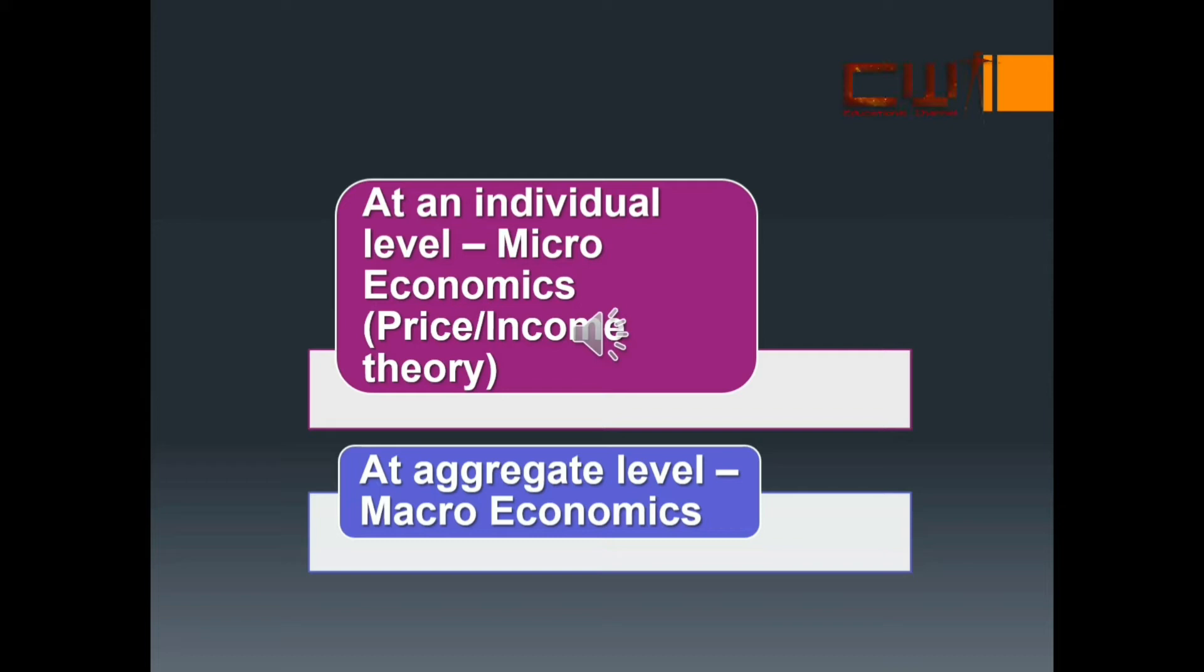Microeconomics is also called price theory and macroeconomics is called income theory. The former explains the composition or allocation of total production, why some things are produced more than others and the latter explains the level of total production and why the level rises and falls. We shall explain these two branches in detail in the next chapter.